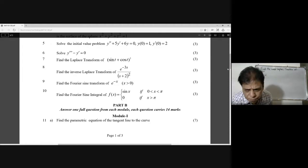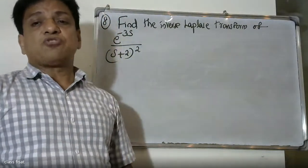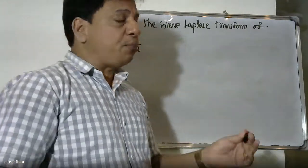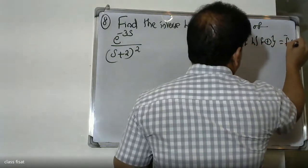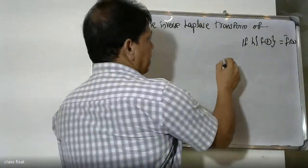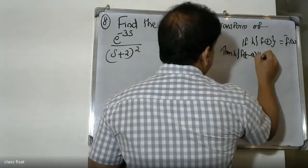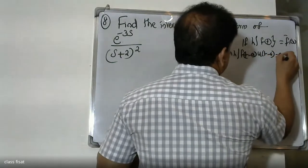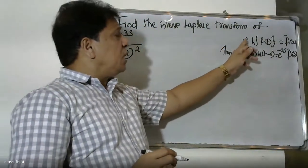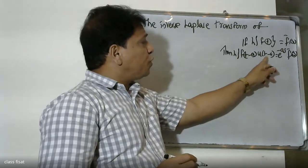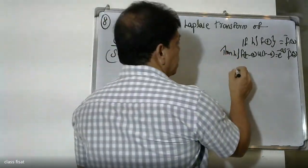We can change the problem using the Laplace transform second shifting property. The second shifting property states: if L of f(t) equals F̄(s), then L of f(t minus a) into u(t minus a) is equal to e raised to minus as times F̄(s).